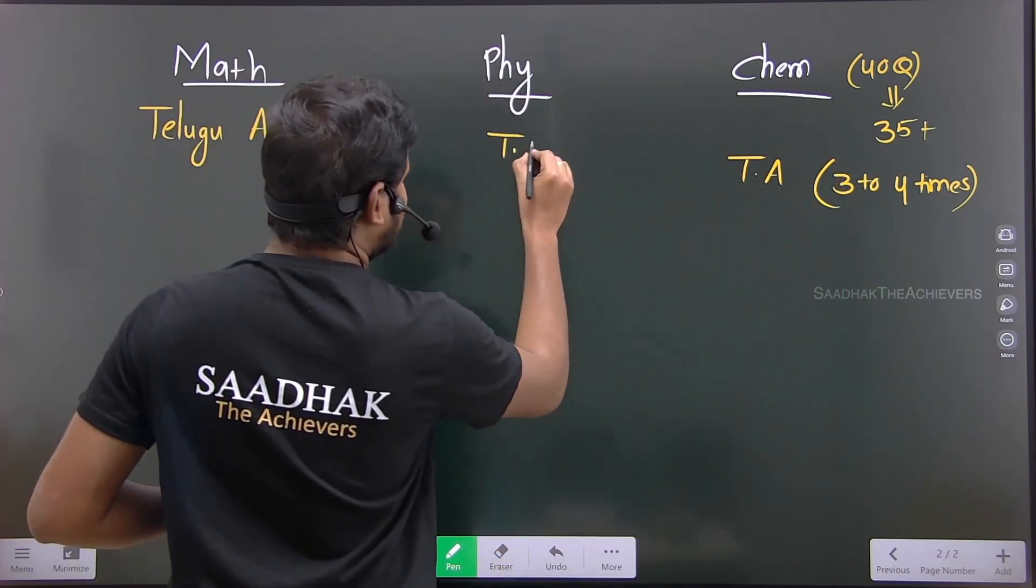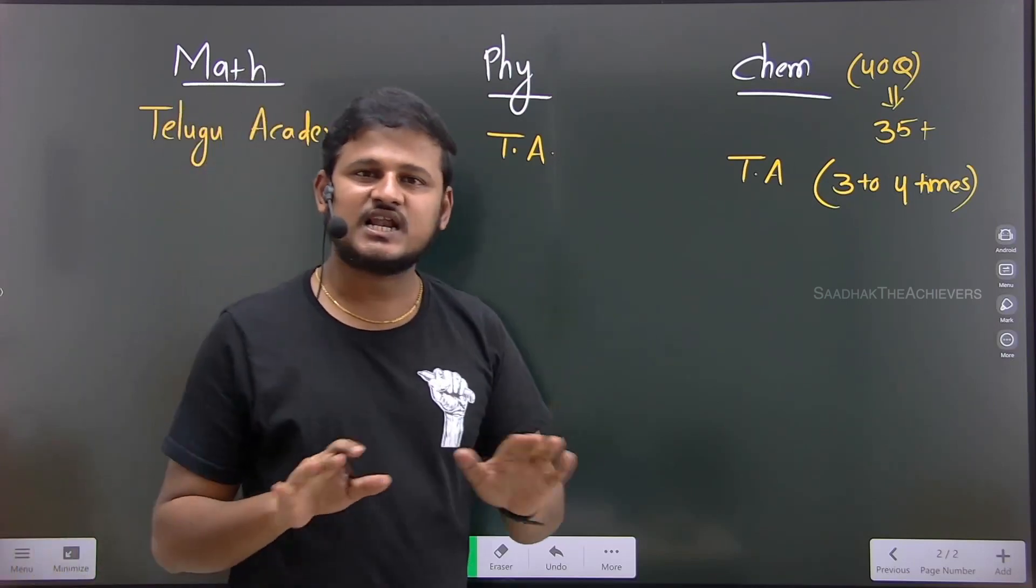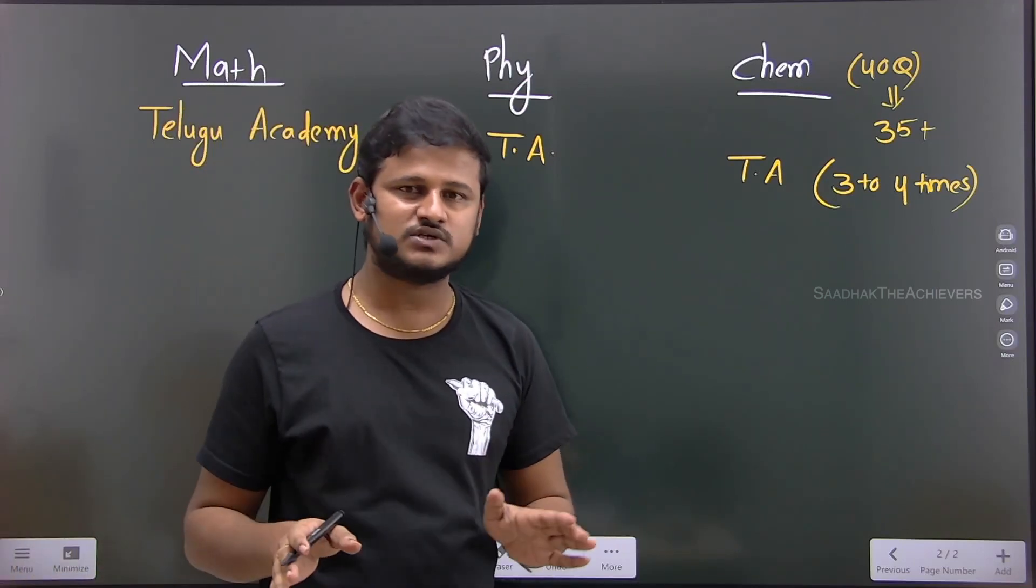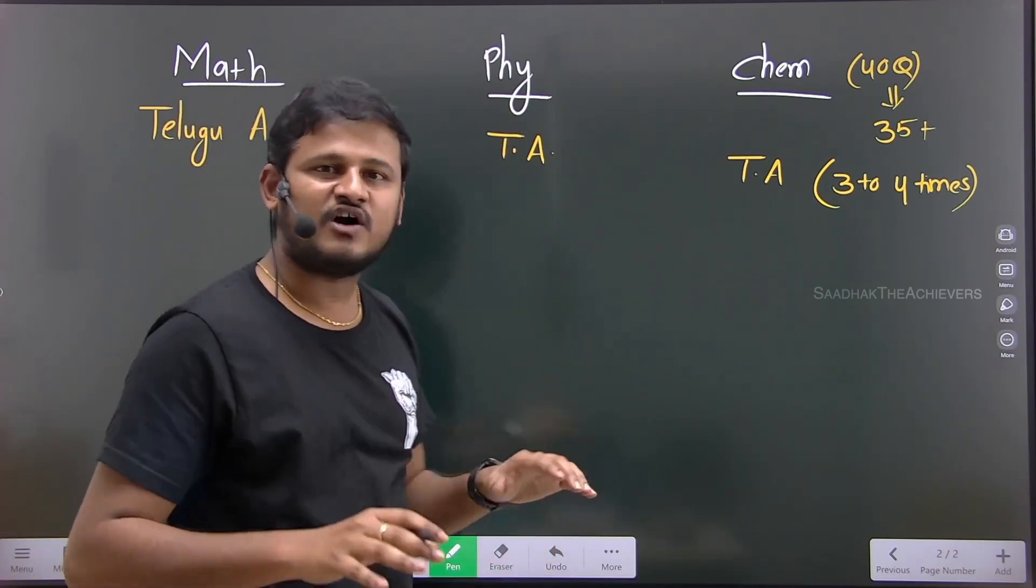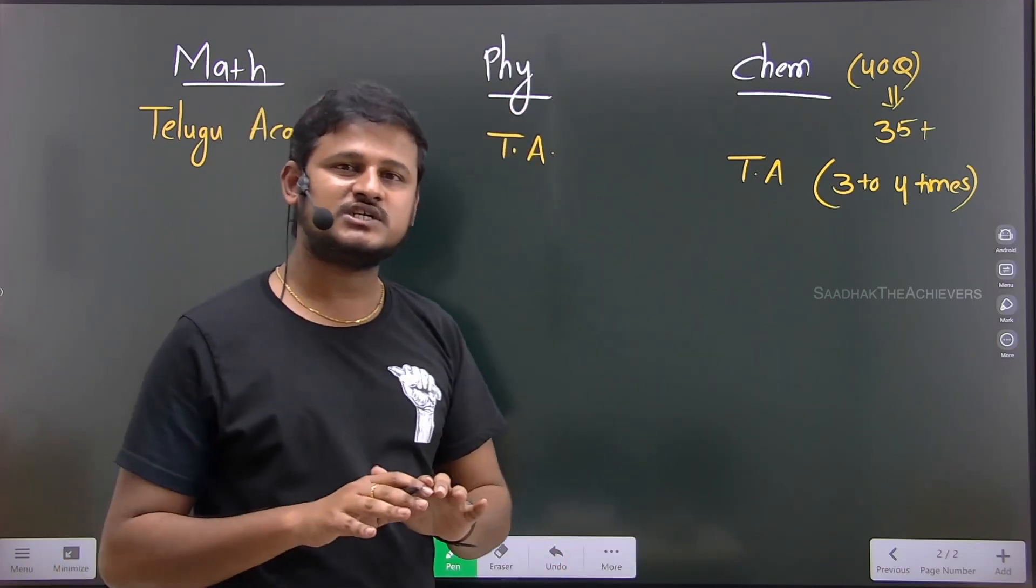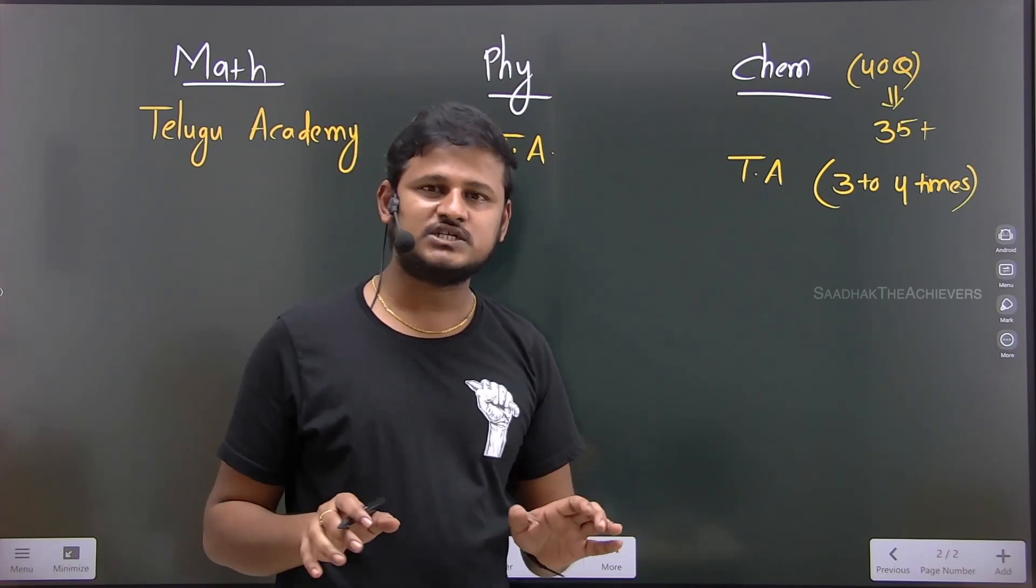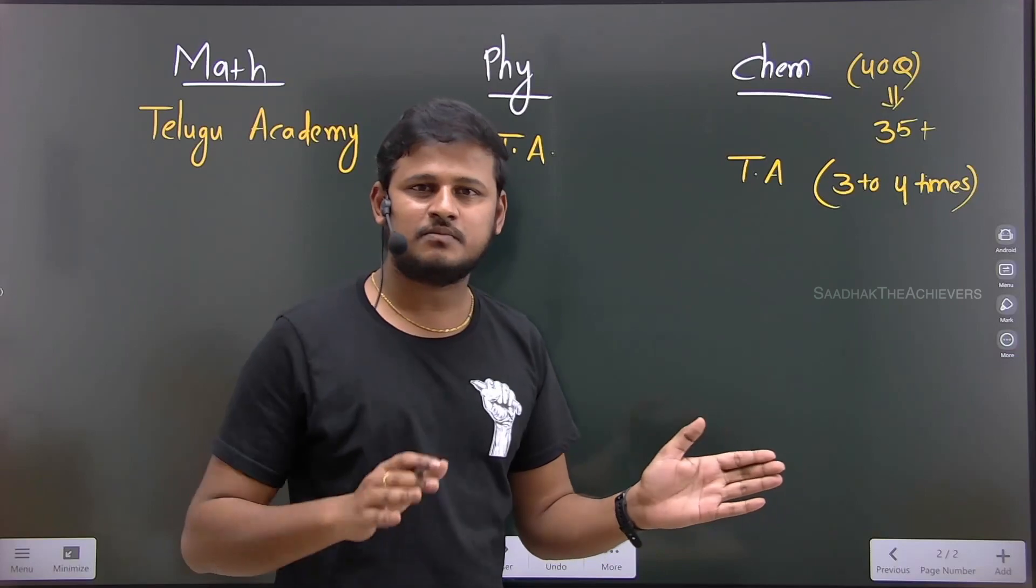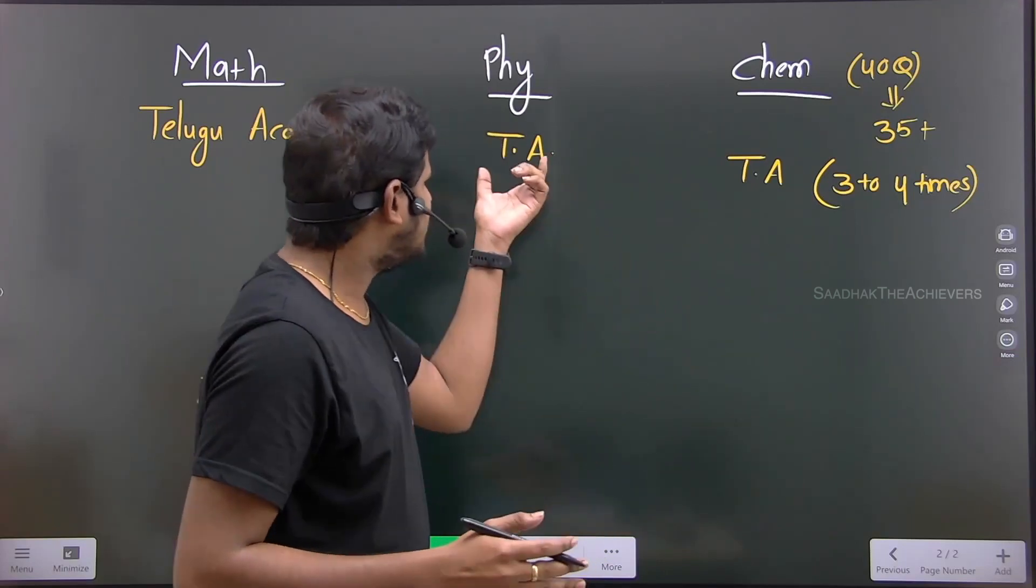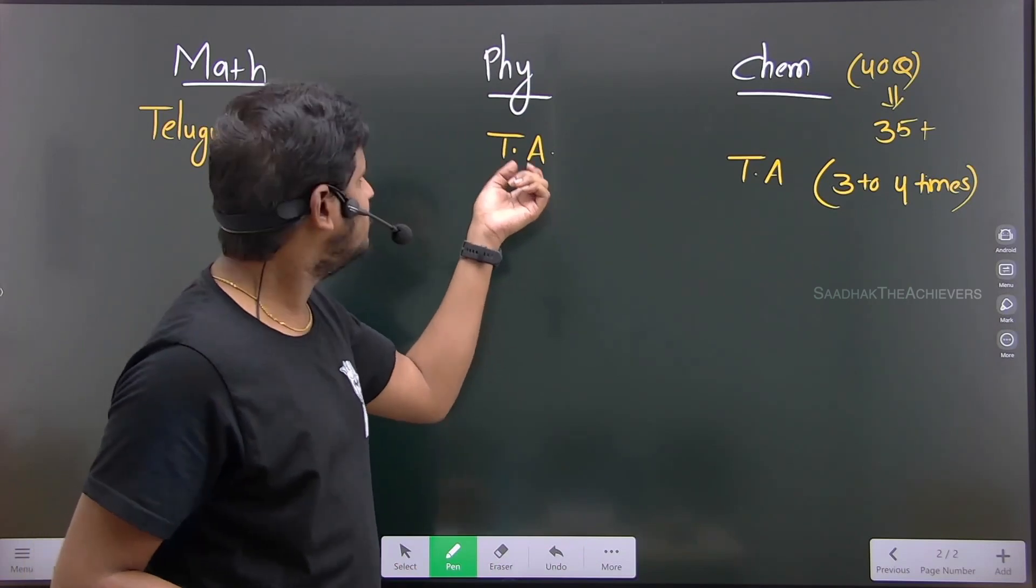Even for physics also, out of 40 questions, 18 to 20 questions are very easy. 18 to 20 questions are completely direct formula-based. If you read the textbook, those 20 questions are very simple. Another 15 questions are moderate - not too easy, not too hard, somewhat application-based. Those questions also you can easily do from the textbook.